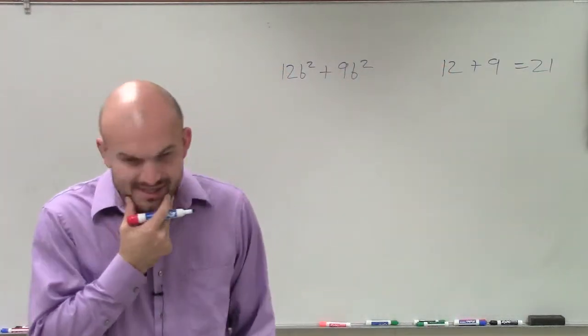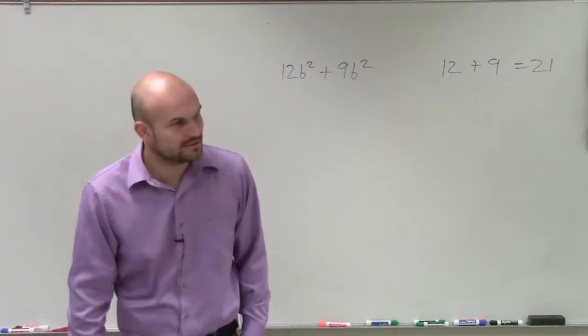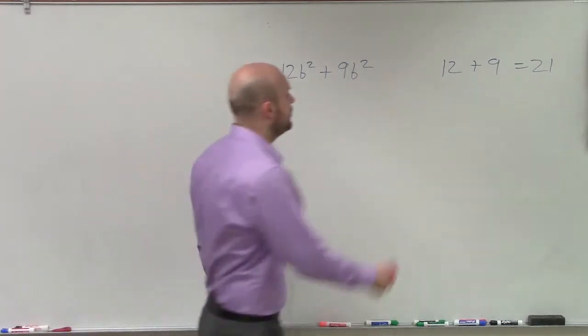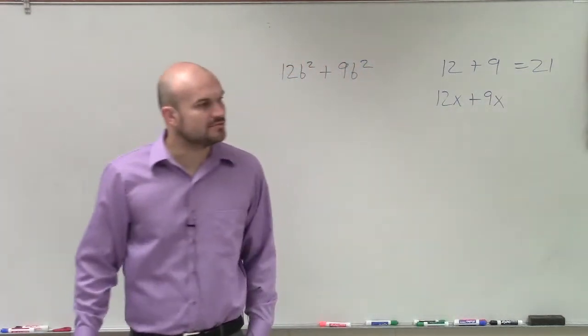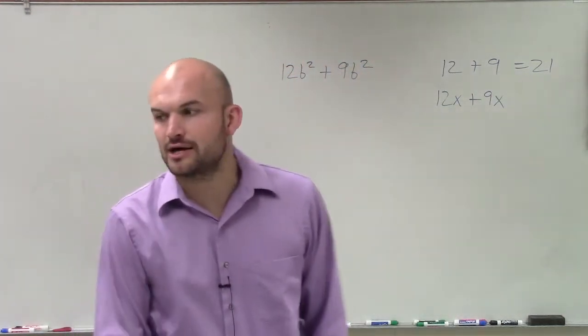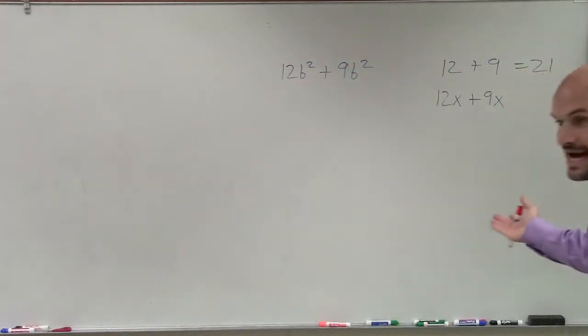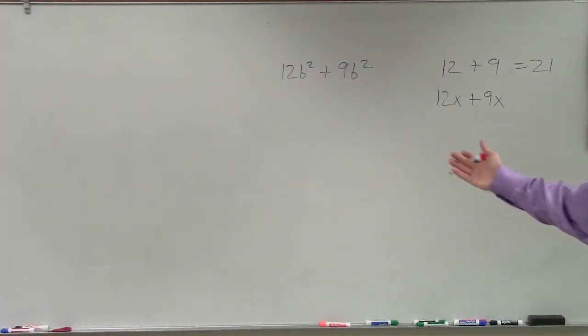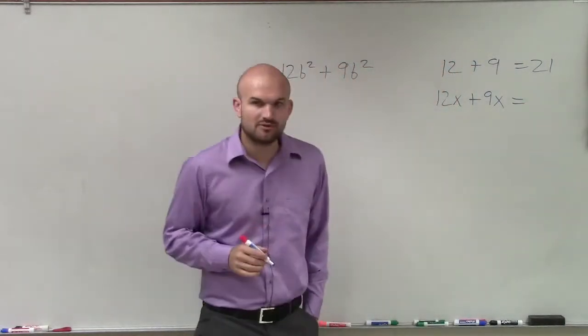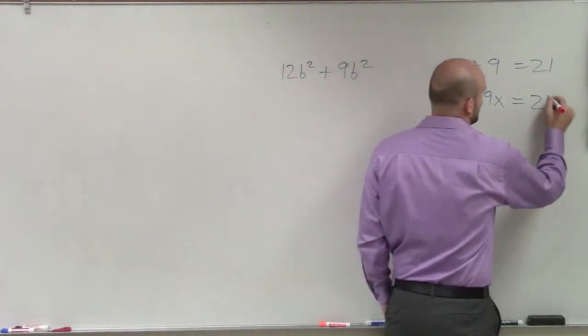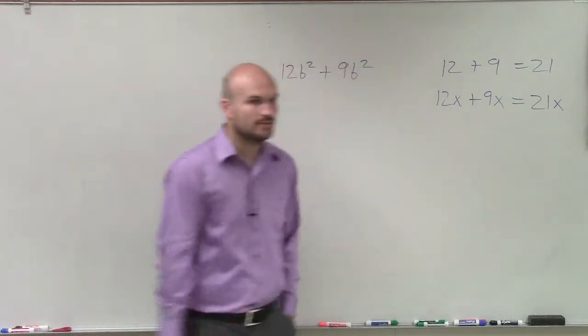Now, the next thing is, what if we add the same variable factor? What about if I do 12x plus 9x? Well, hopefully you guys remember from algebra 1, 12x plus 9x, you just combine them and leave the x's the same. You can combine them because they're the same variable factors. Therefore, this would be 21x.